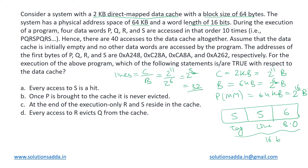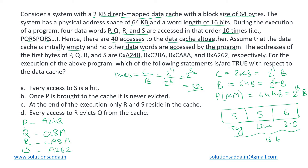We have four data words P, Q, R, and S accessed in that order 10 times — that is, PQRSPQRS repeatedly — giving 40 total accesses to the data cache. The cache is initially empty and no other words are accessed. Their hexadecimal addresses are: P = 0xA248, Q = 0xC28A, R = 0xCA8A, and S = 0xA262.